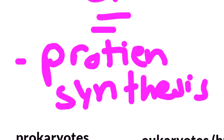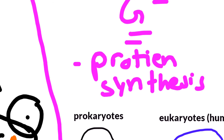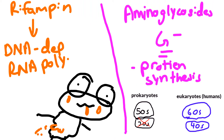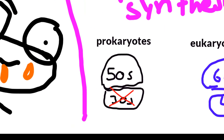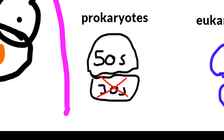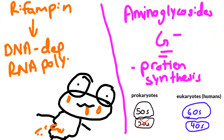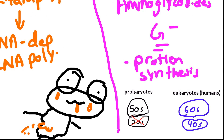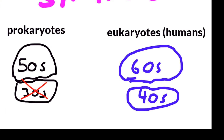Aminoglycosides cover gram-negative organisms and work by inhibiting protein synthesis — specifically screwing up the elongation process at the 30S ribosomal subunit, causing the mRNA to be read incorrectly, producing malformed proteins. This only affects the 30S subunit because prokaryotes have 30S and 50S subunits, whereas eukaryotes — us — have 40S and 60S.